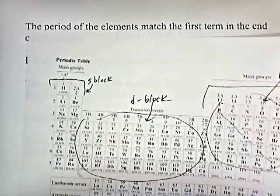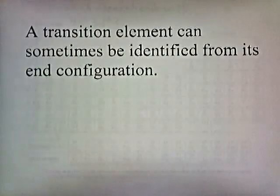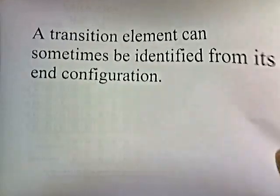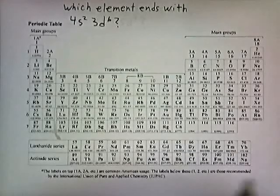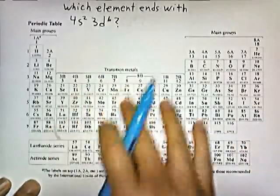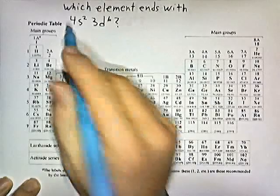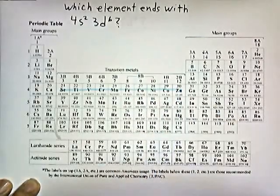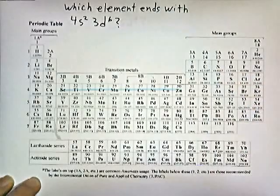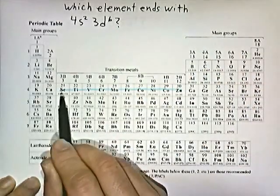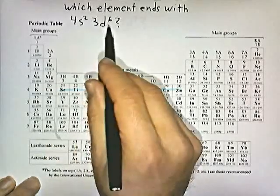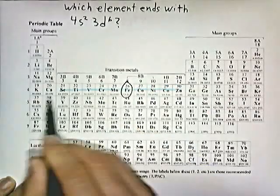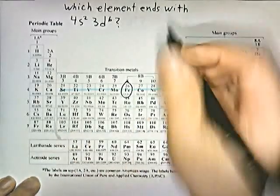A transition element can sometimes be identified from its end configuration. Which element ends with 4s2, 3d6? Since it ends in d, it's a transition element. The 4 means it's in the fourth period of the transition zone. It ends with d6, so we count 6 elements in the fourth row of the transition zone: 1, 2, 3, 4, 5, 6 — that's iron.